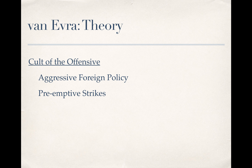Second, militaries favored strategies that included preemptive strikes. If militaries believe that defense is largely impotent, they're hypersensitive to moves toward a first strike. The only way to counter a first strike is to move even faster — so you put your military in position to strike with lightning speed and respond to the perception of a threat with a preemptive strike that is even faster.